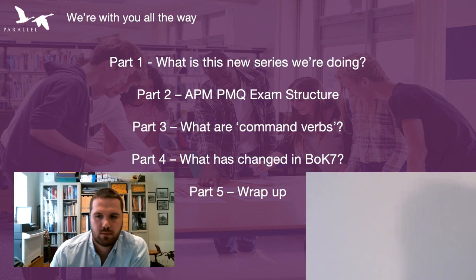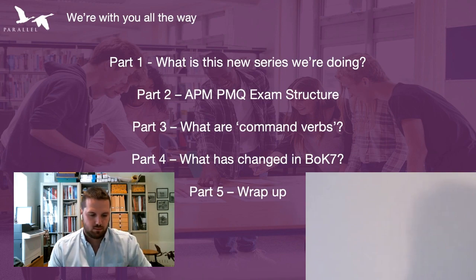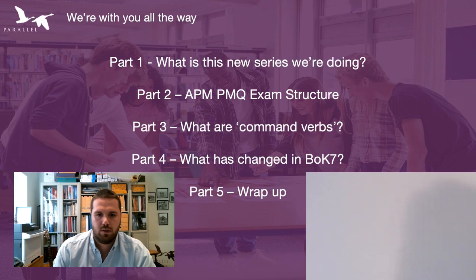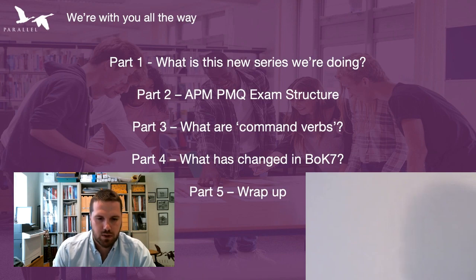There's one other thing you might want to look at on the APM website, available to all candidates — it's called indicative content. That is the syllabus broken down into all its chunks, but with examples throughout. So for that state question about stating a source of conflict, you can look into the indicative content and it will suggest some potential sources of conflict.